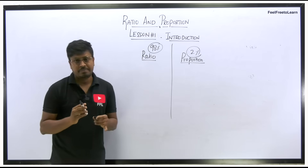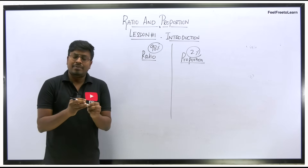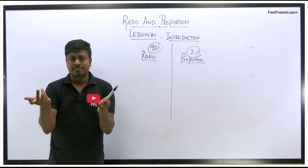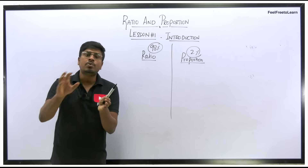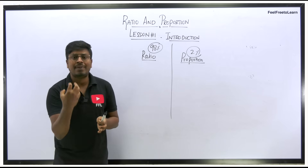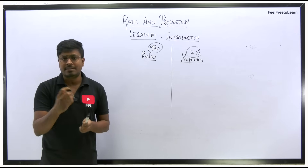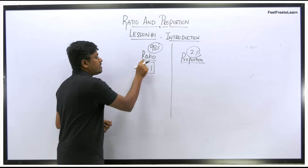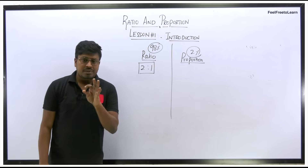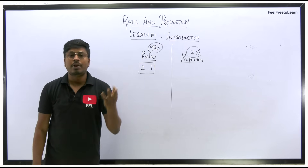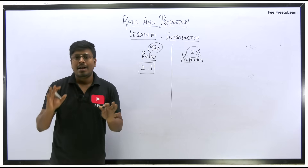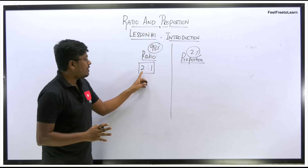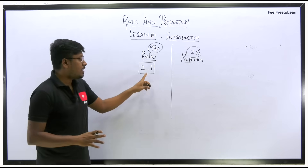Now let me define ratio. The definition of ratio can be stated in many ways, but understand this: ratio is the comparison of two or more items. After comparison, that comparison value is represented as a number using two dots, for example 2:1. So the definition of ratio is comparing two or more items, cancelling common factors, and representing the final value as a ratio.